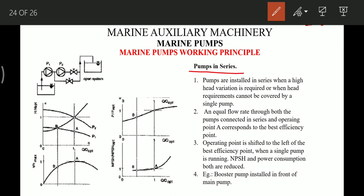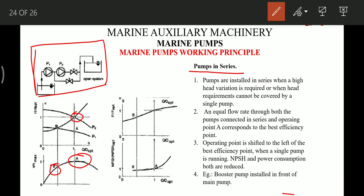When pumps are designed to run in series, they will operate at the design point for maximum efficiency. However, if one pump stops and the system runs on a single pump, the operating point moves far left from the design point. In this case, power input decreases and net positive suction head also reduces when pumps are operating in series.